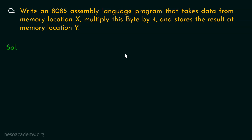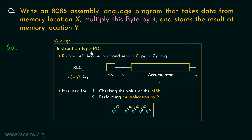So let's try to solve it. As mentioned in the question, we are supposed to take out the data from memory location X, then multiply this data byte by 4. If you remember, we learned about the instruction type RLC and saw it can be used for performing multiplication by 2. So clearly, executing the instruction RLC will multiply the data within the accumulator by 2.